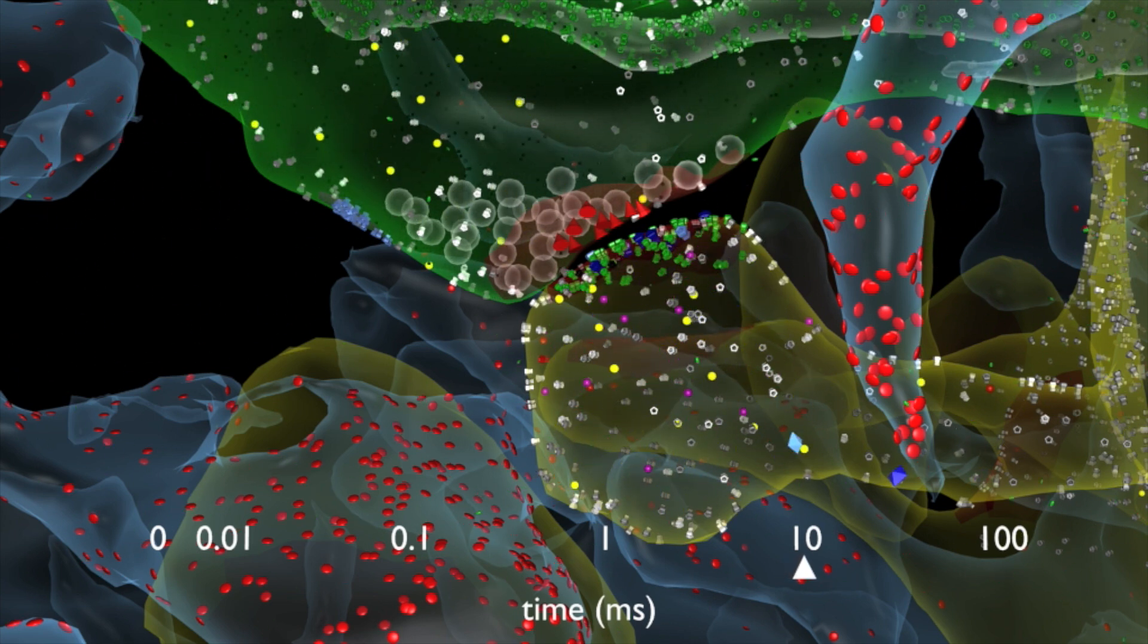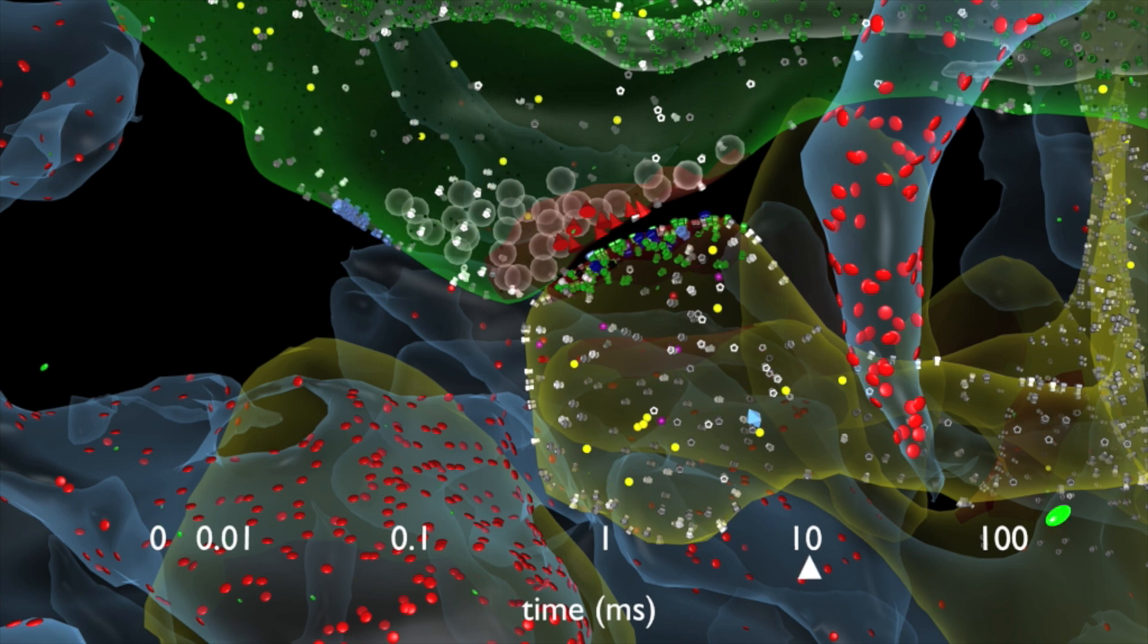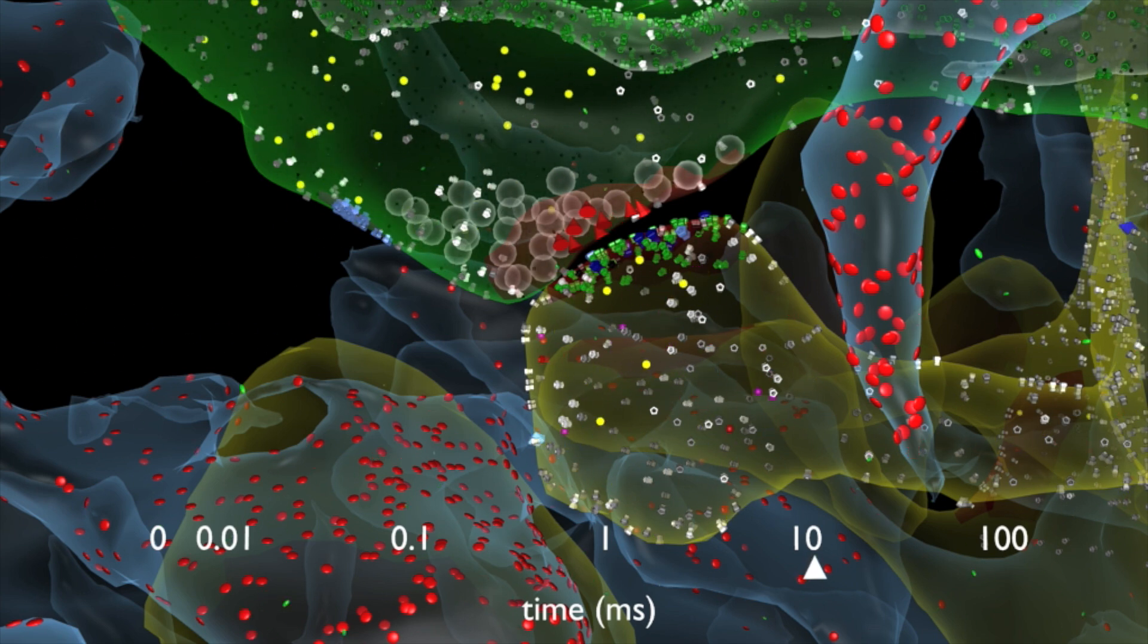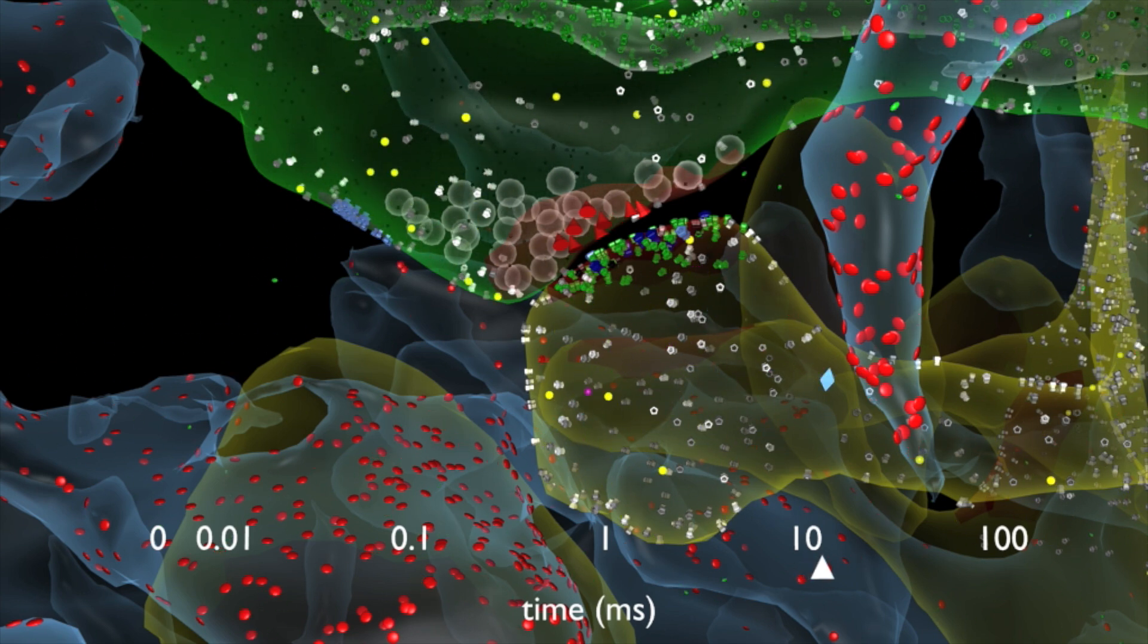In the dendrite, green and blue show neurotransmitter receptor proteins, which control the amount of electrical signaling and the amount of calcium coming into the second neuron.